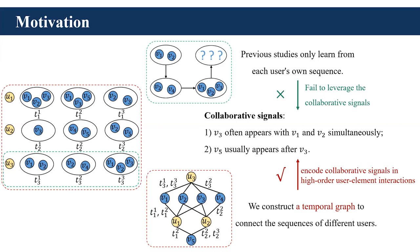Therefore, the probabilities of V3 and V4 will become higher due to the collaborative signals, but existing methods fail to leverage this useful information. In this paper, we construct a temporal graph to connect the sequences of different users, and we design a model to learn the temporal graph to explicitly encode the collaborative signals.